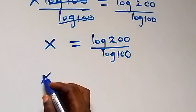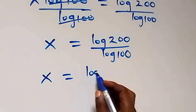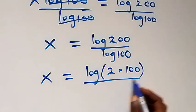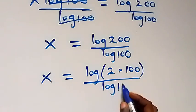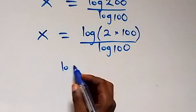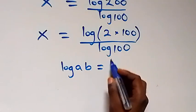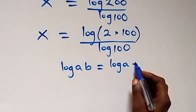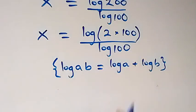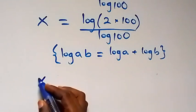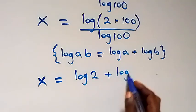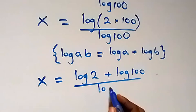From here we can write 200 as 2 times 100, which gives us x equals log(2 × 100) over log(100). Then applying the product law of logarithms — where log(a × b) equals log a plus log b — we can write this as x equals log(2) plus log(100), all over log(100).